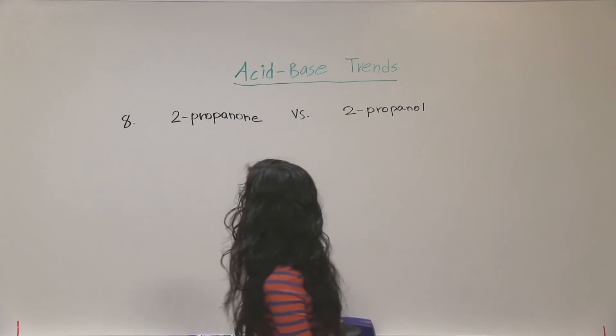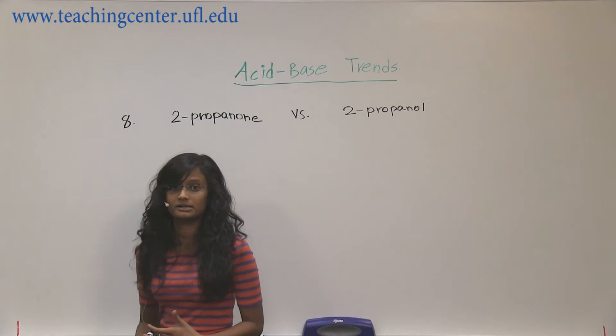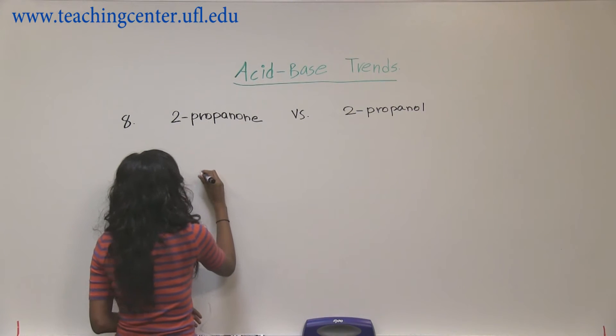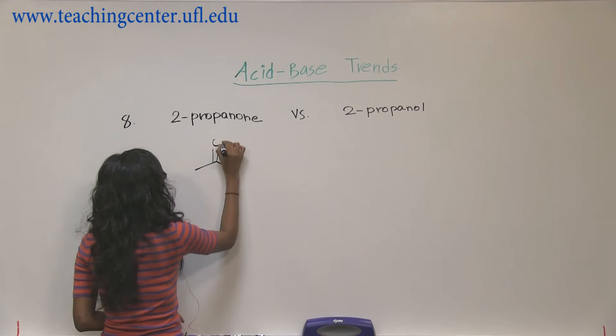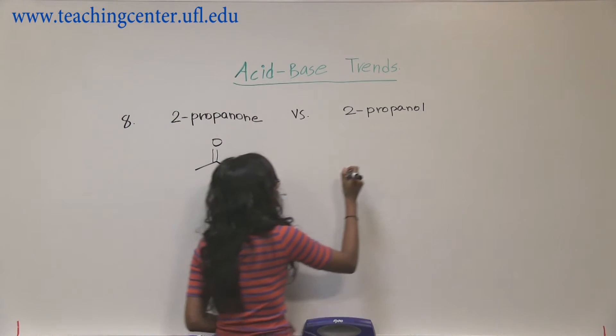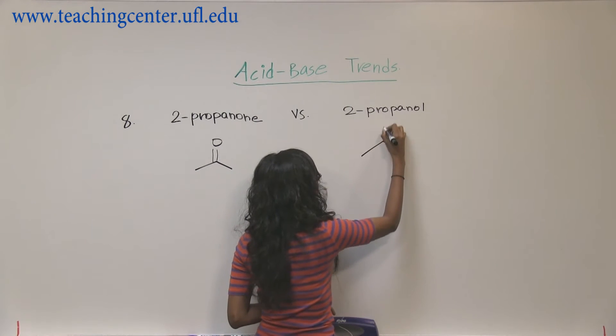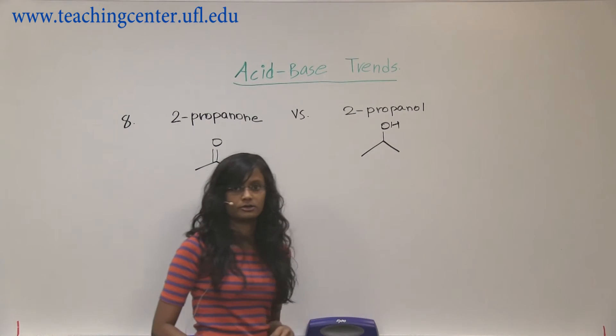All right, so the next one is two IUPAC names that we can draw and then evaluate. O-N-E is for a ketone and O-L is for alcohol group.